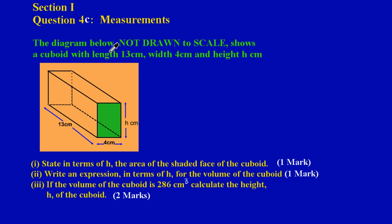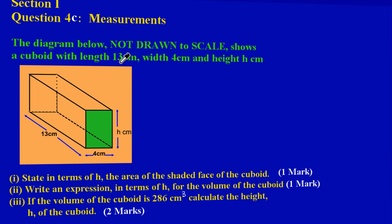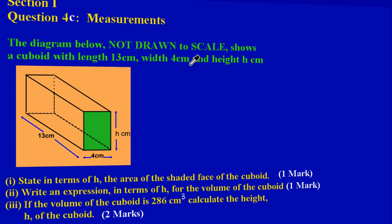The diagram below, not drawn to scale, shows a cuboid with length 13 centimeters, width 4 centimeters, and height h centimeters. And it's very clear on the diagram here. Here I'm running my pointer along the length which is 13 centimeters here at the base. I'm running my pointer along the width which is 4 centimeters, and at the side here I have my vertical height, which is h.